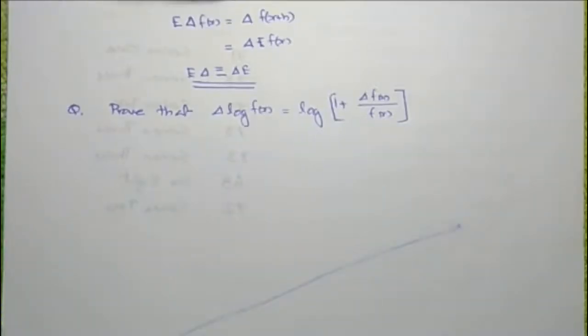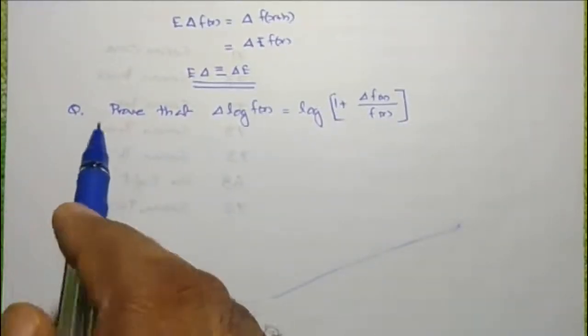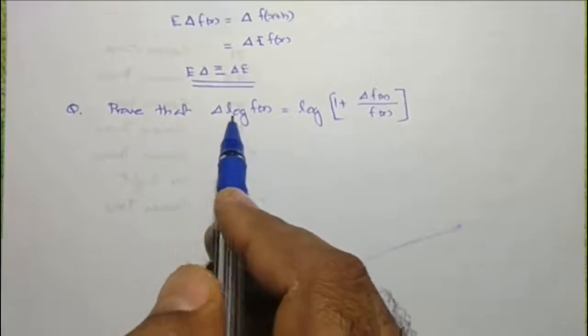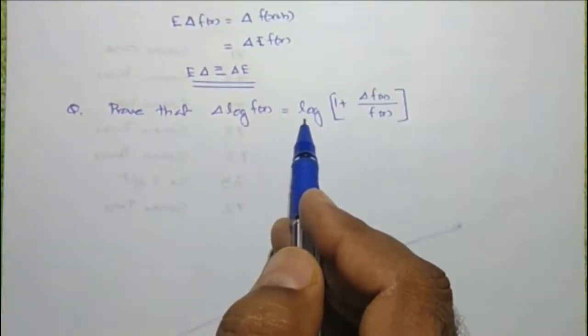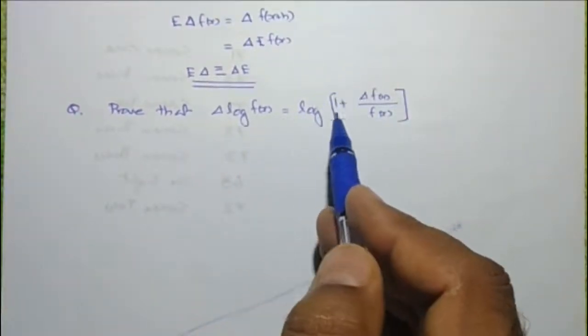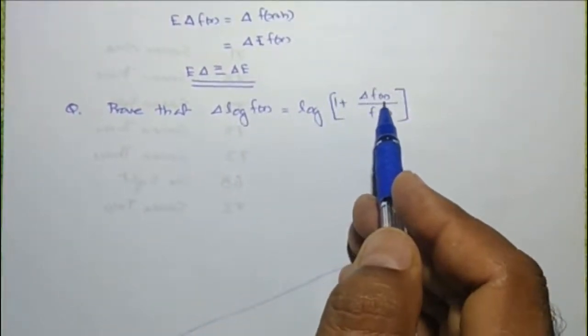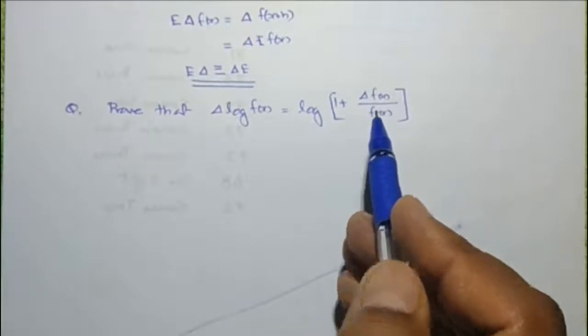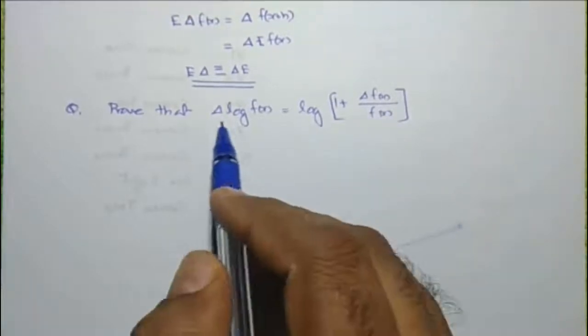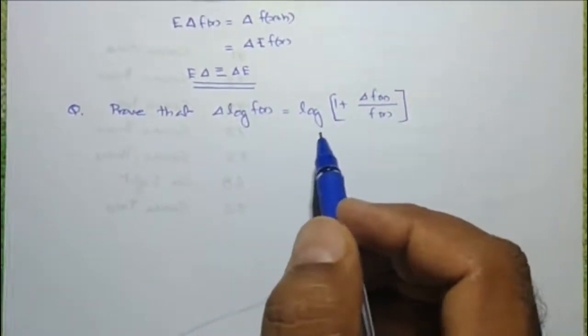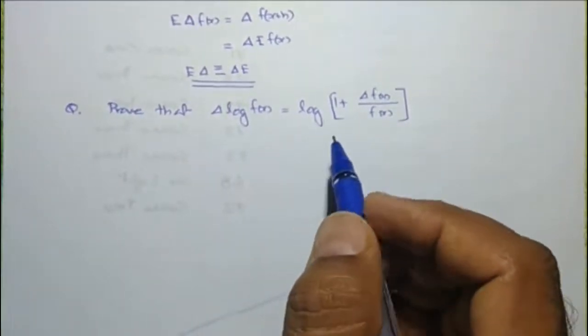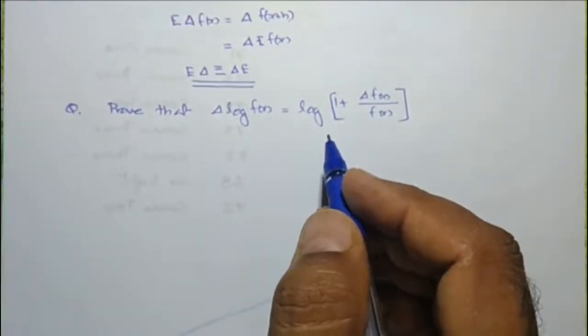Here is another problem. Prove that delta log f of x equals log of 1 plus delta f of x divided by f of x. We will solve this problem with the help of the identity E equals 1 plus delta.